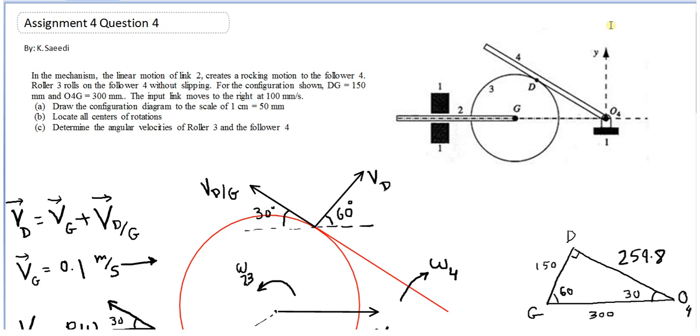We have point G. We know point G is moving to the right and the velocity is 100 millimeter per second. So we know velocity of G is horizontal to the right. Also, I know velocity of D with respect to G. VDG is the result of rotation of disc 3 about point G.